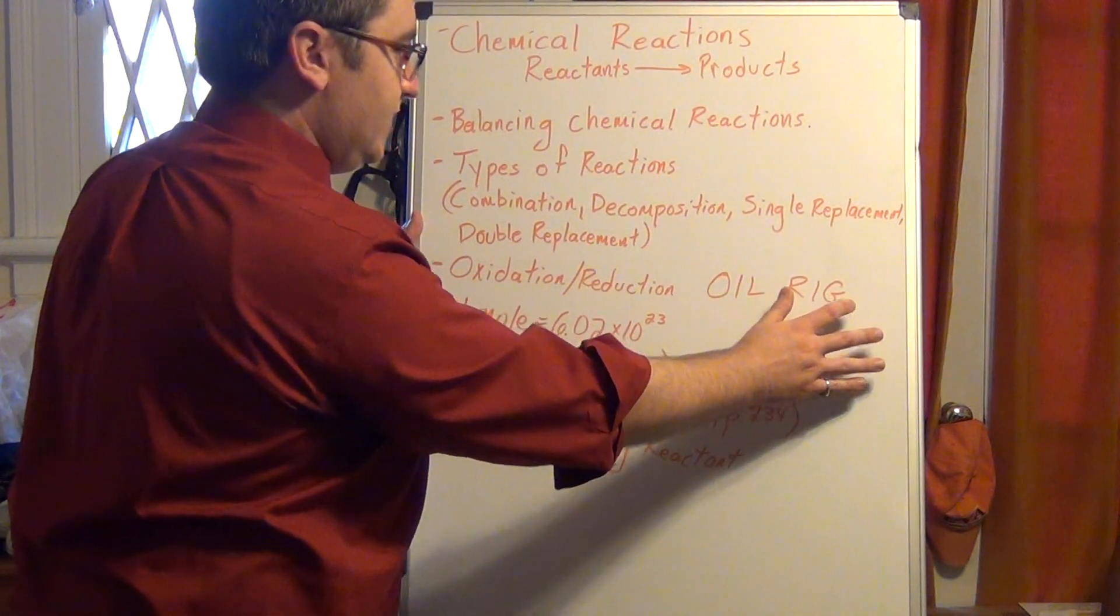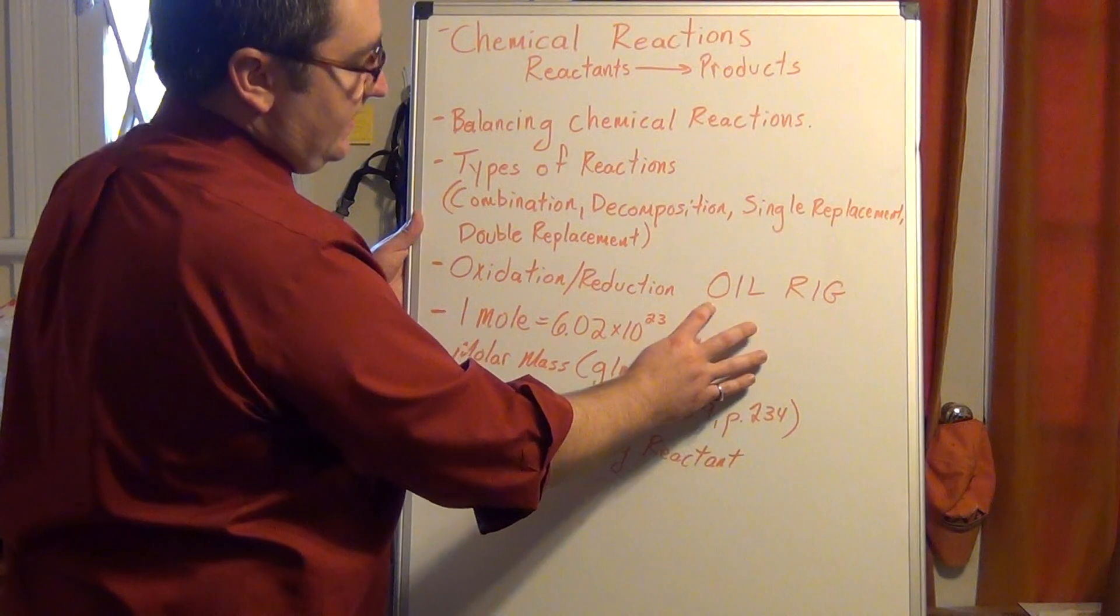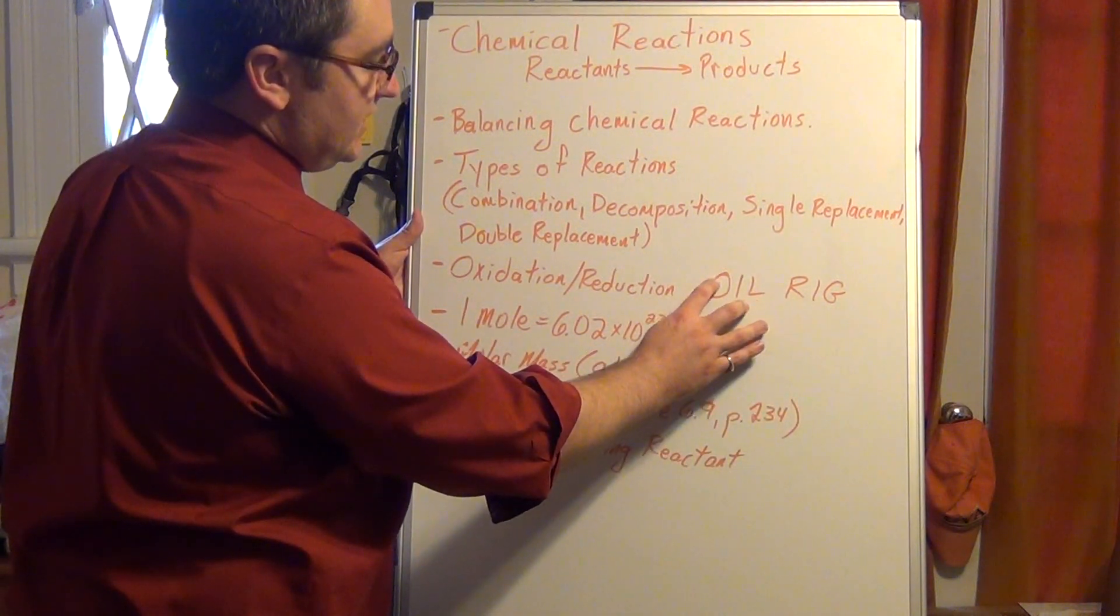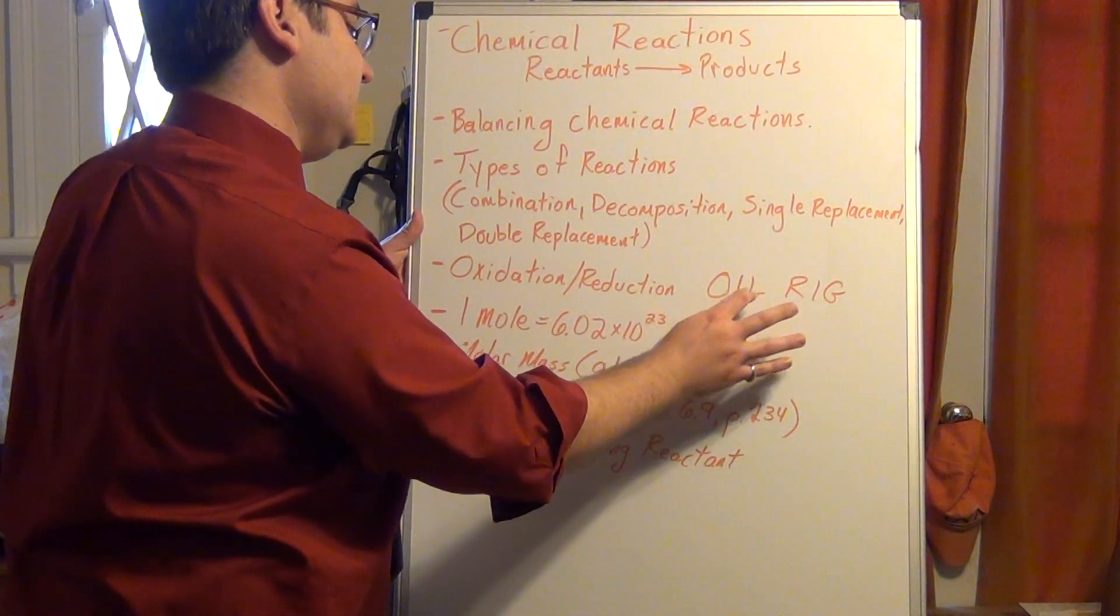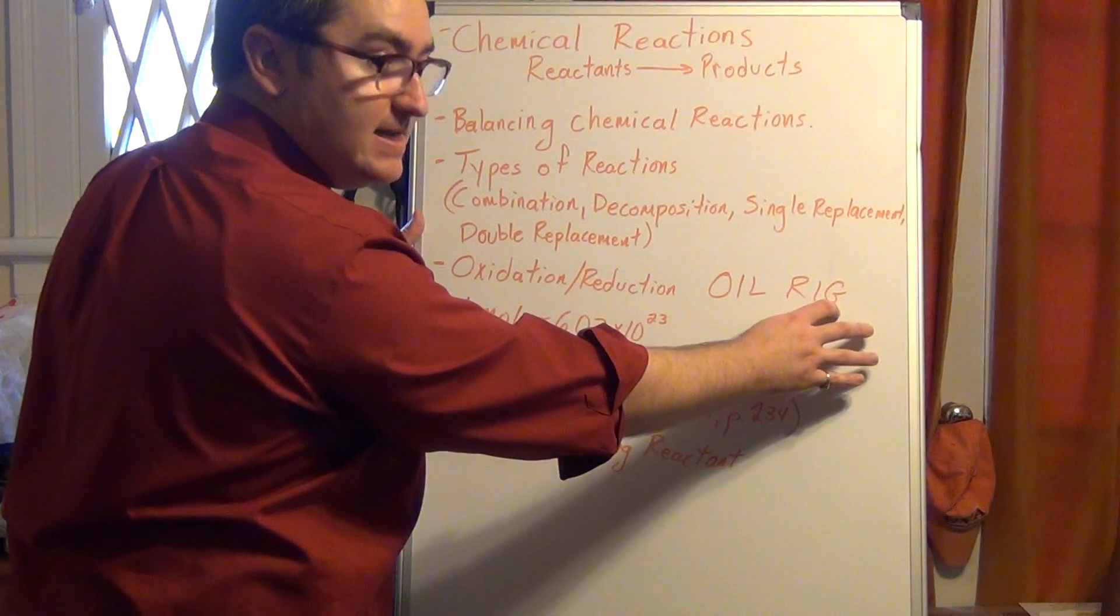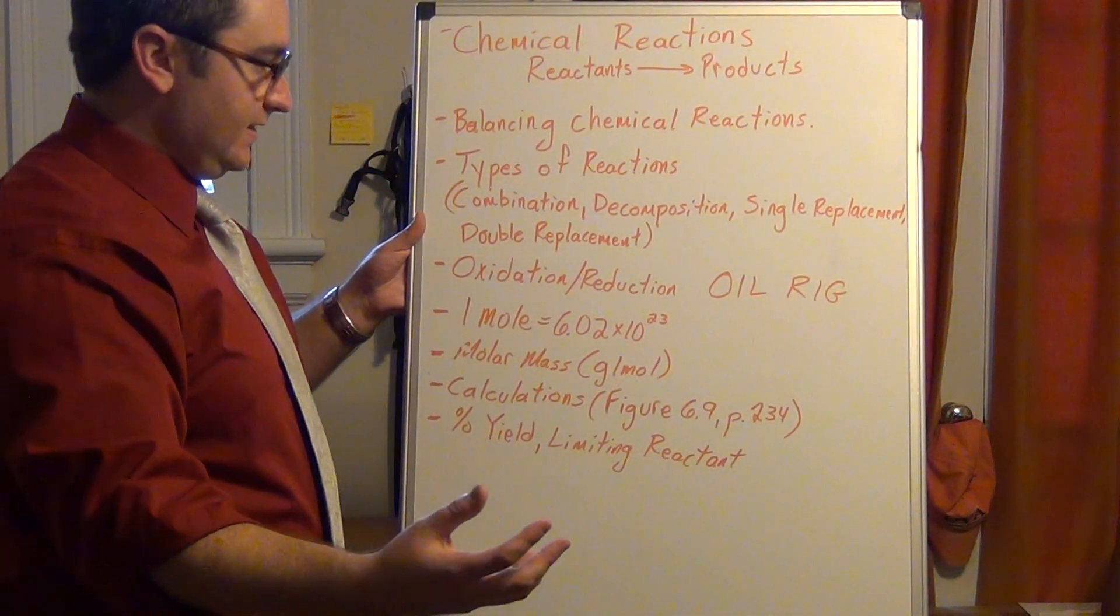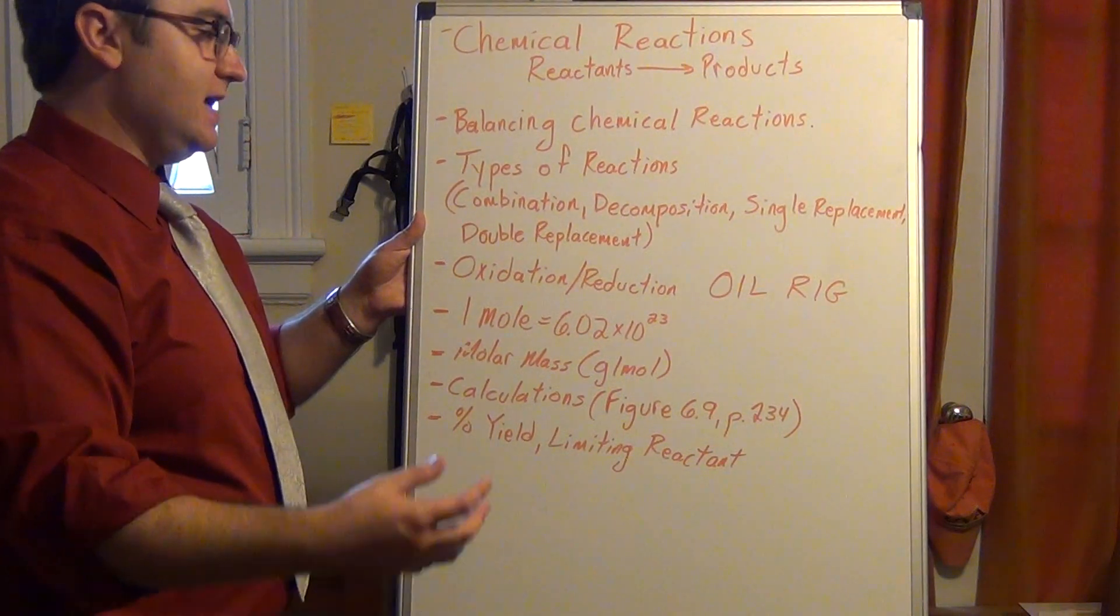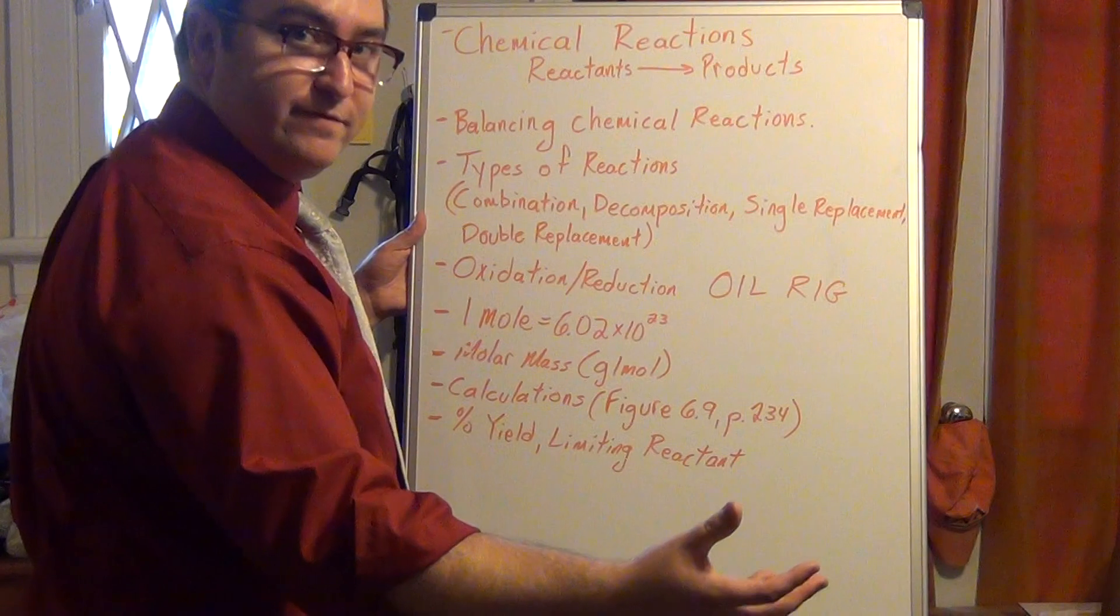An easy way to remember this is the memory device or mnemonic called OIL RIG. Write this out on your exam when you're on oxidation and reduction type questions. This stands for oxidation is loss, reduction is gain. This is going to be oxidation is a loss of electrons, reduction is a gain of electrons.